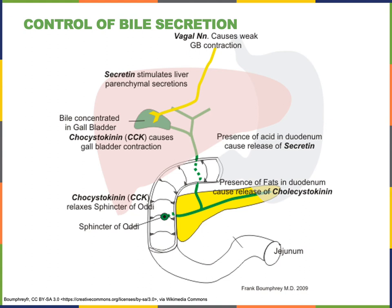CCK will also cause the sphincter of Oddi — the smooth muscle surrounding the opening from the common bile duct to the duodenum — to relax. Then bile will flow down from the gallbladder and from the hepatic ducts of the liver through the common bile duct into the duodenum, where bile can then mix with chyme and the pancreatic juice and facilitate the chemical digestion and absorption of lipid-soluble nutrients.